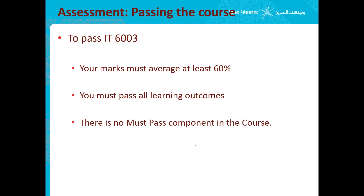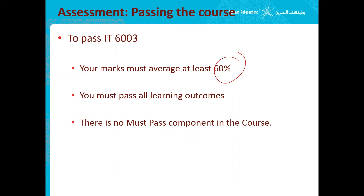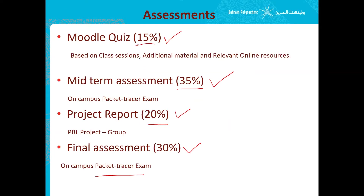To pass this course, you need an average of 60%. Based on these four assessments, if your average score for all of them is 60%, then you pass the course. You must pass all the six learning outcomes we discussed. There is no must-pass component, meaning there is no requirement that any individual assessment must be passed. It's fine if you fail one of them, but if your aggregate for all of them is at least 60%, that's when you pass the course.